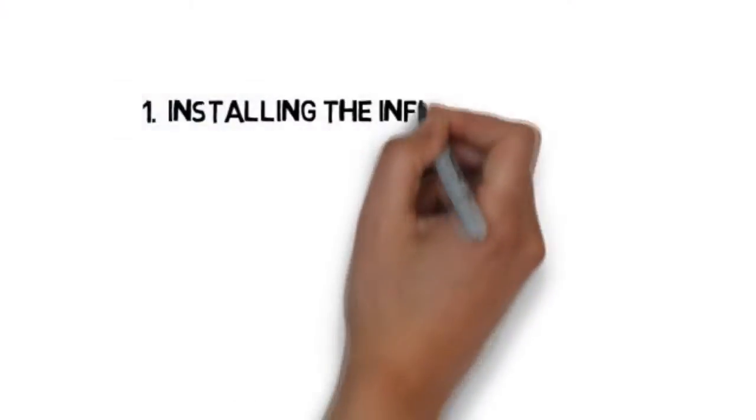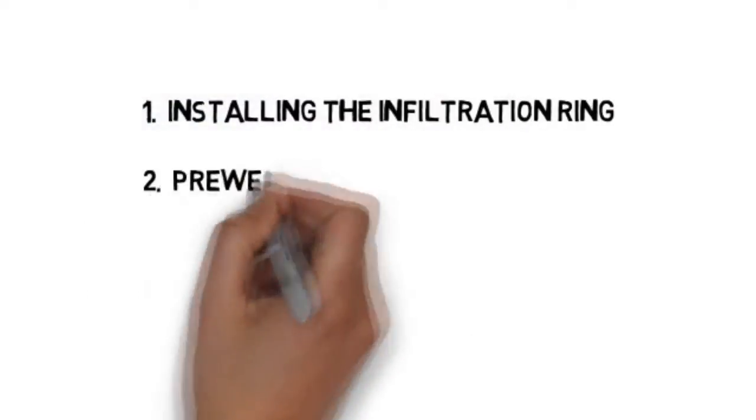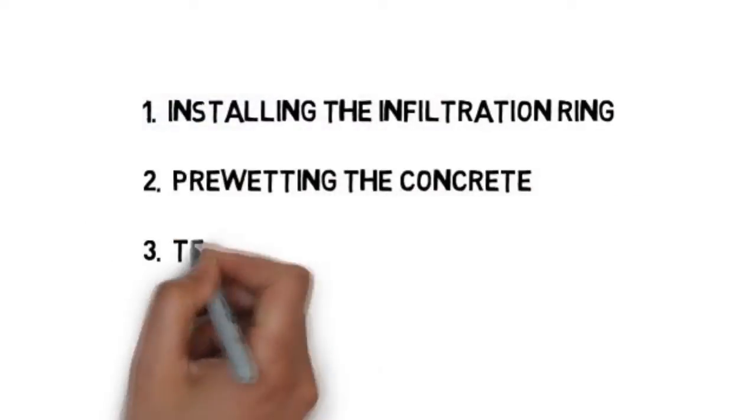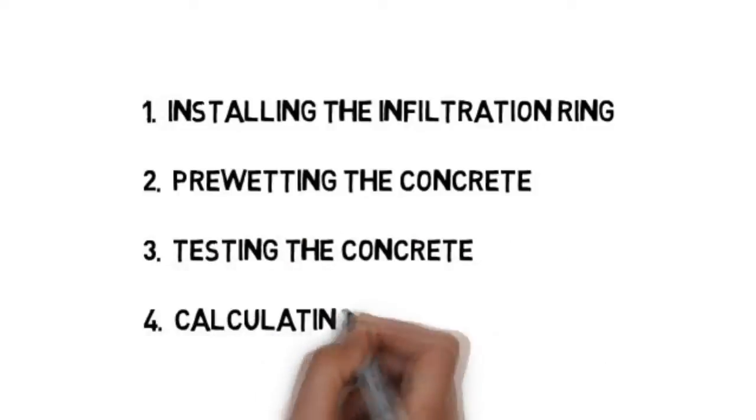The test consists of four main components: installing the infiltration ring, pre-wetting the concrete, testing the concrete, and calculating the results.